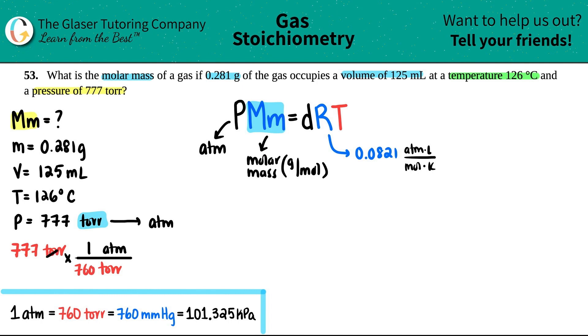Get rid of the torr. And now we have ATM. 777 divided by 760. I'm going to give this a few places after the decimal because this is not the final answer. So try not to round. So maybe I'll just say 1.0224. And that's ATM.